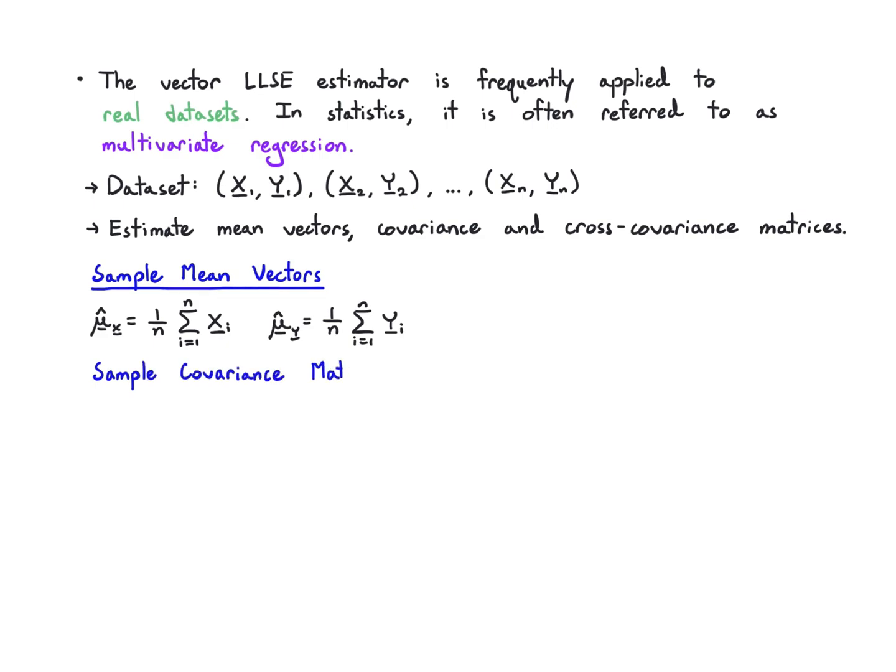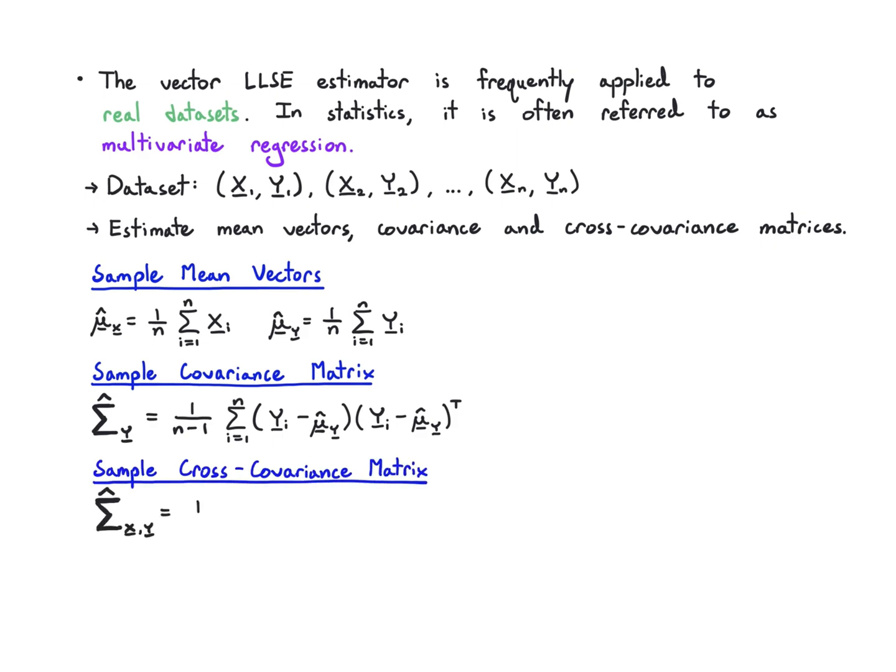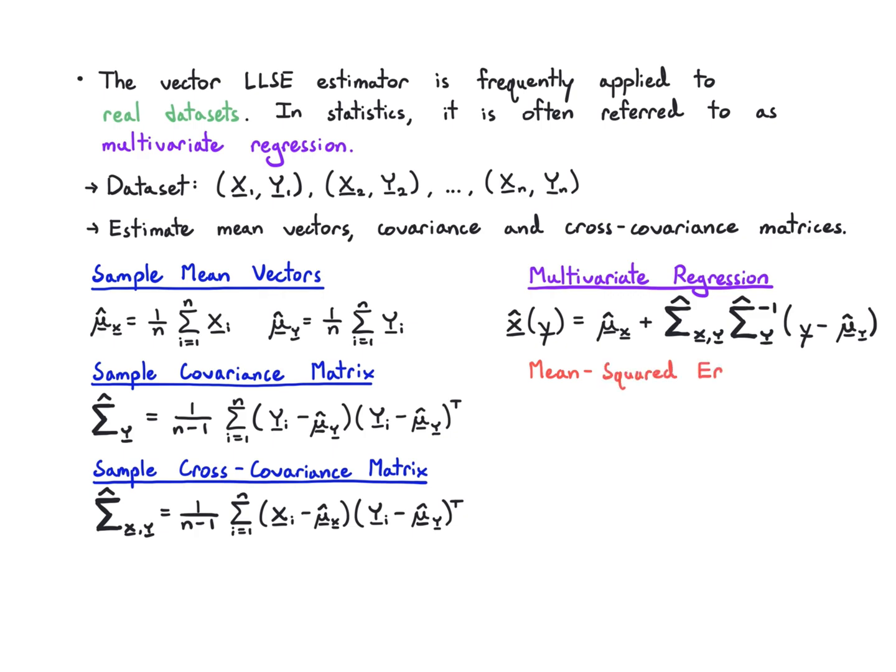We do that exactly like we did in the scalar case. We get the sample mean vectors - that just means averaging the vectors that we have to get a mean vector estimate, which we call the sample mean vectors. We do the same thing for the sample covariance matrix. We take the outer product of y minus its mean - y minus its mean times y minus its mean transpose. We use 1 over n minus 1 again to avoid bias. We do the same for the cross covariance matrix, except now we have x in place of y here, but otherwise everything's the same. Now we can form our multivariate regression model. We predict x by adding its mean vector plus the cross covariance matrix times the inverse covariance matrix of y times y minus its mean. The mean squared error we can also work out using this formula. This is just in case you want to apply this to real data - we've collected all these formulas into one place.